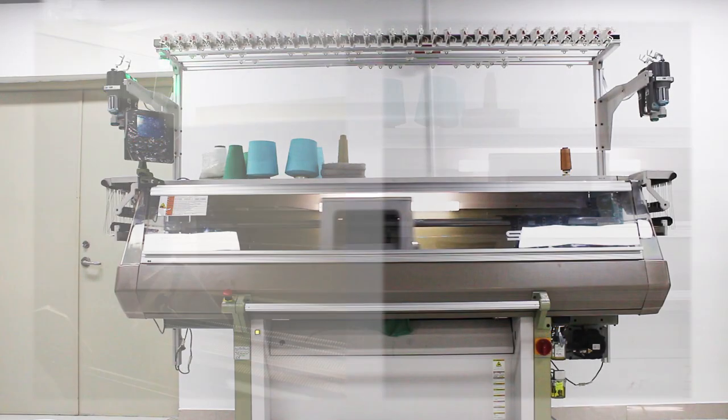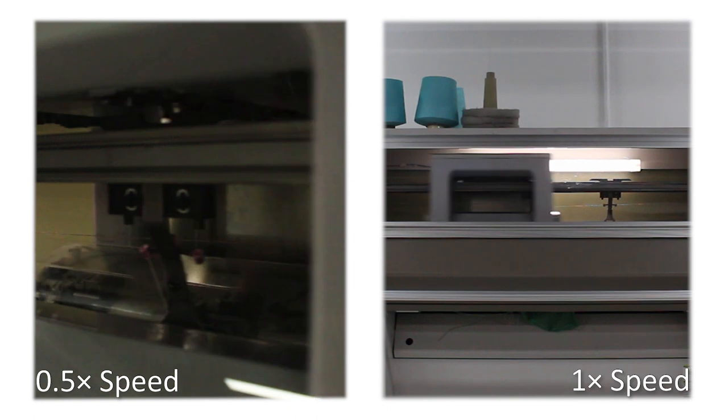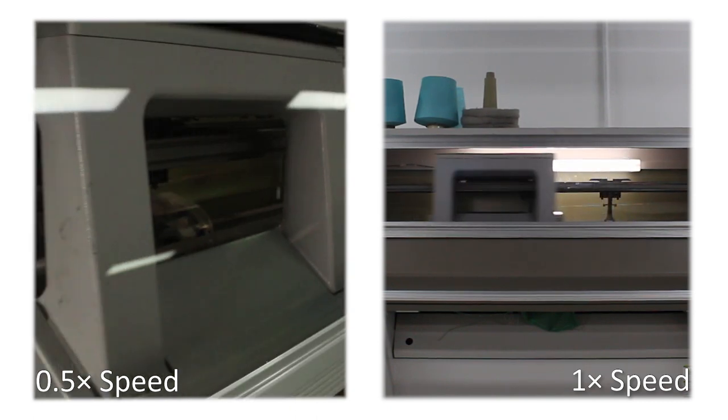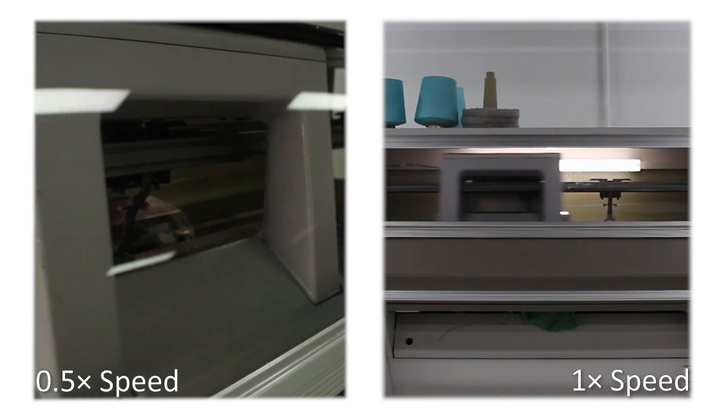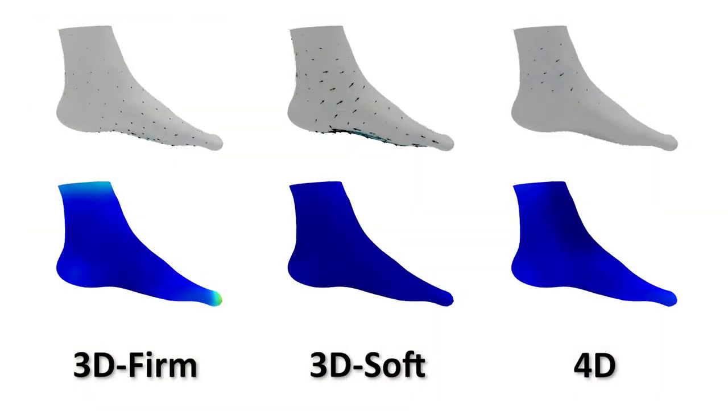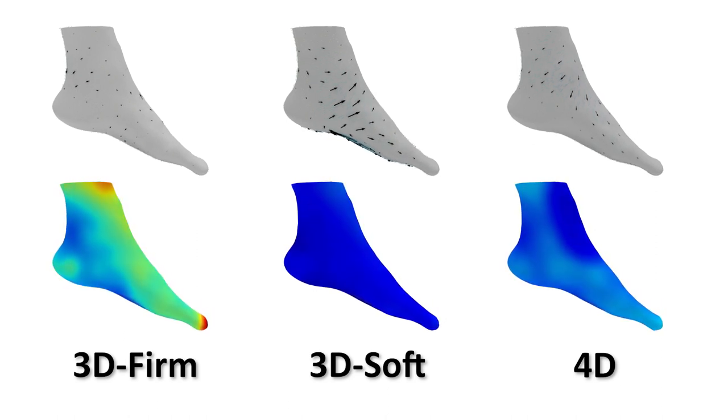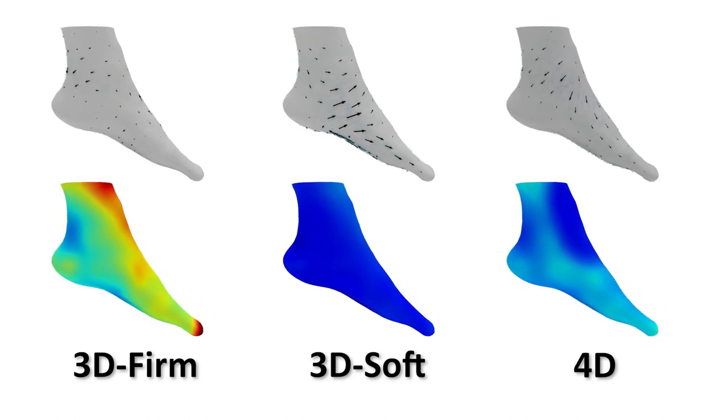The examples we present in the video are knitted with a fully computerized Shima Seiki machine. For the sock example, both the stresses and the displacement have been significantly reduced with the 4D design.